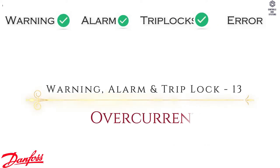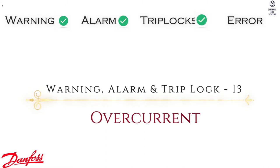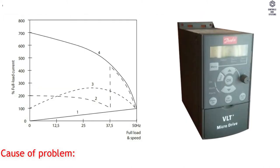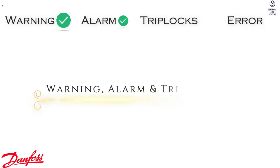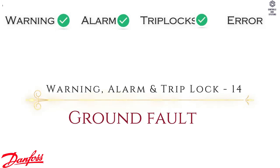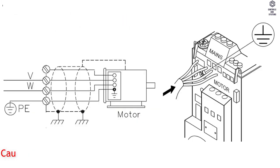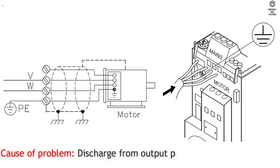Warning, Alarm and Trip Lock 13: Overcurrent. Cause of Problem — inverter peak current limit is exceeded. Warning, Alarm and Trip Lock 14: Ground Fault. Cause of Problem — discharge from output phases to ground.